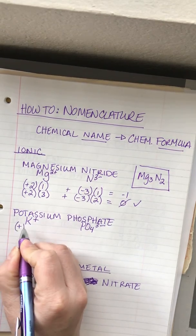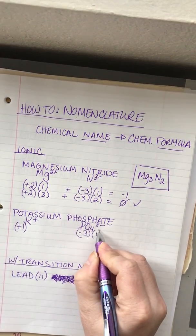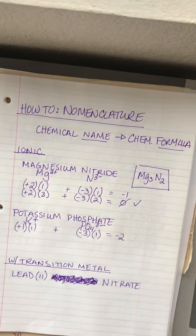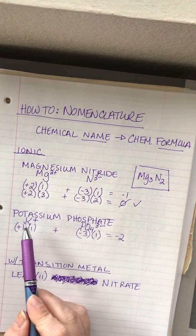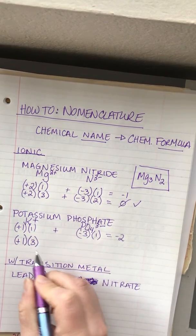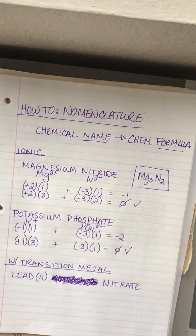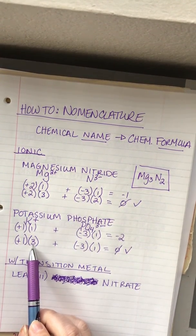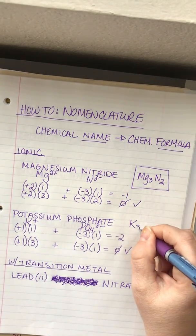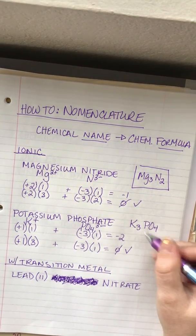We do our charge math again: potassium has a plus 1 and phosphate has a negative 3. If we start with one of each and add them together we'd end up with a negative 2 charge, so we need to add more potassium ions. With a plus 1 and three of them added to one phosphate ion, we end up with a net charge of 0. The 3 becomes the subscript for potassium and 1 for phosphate.